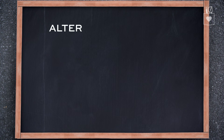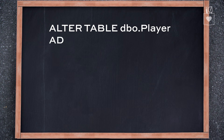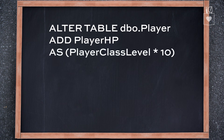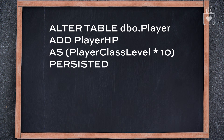That was a lot to think about. So keeping all that in mind, let's get back to the question at hand: how do we want to store player hit points in our database? Having gone through all this, we've decided the answer is to use a computed column. So let's set that up. First, we'll do an ALTER TABLE dvoPlayer, then ADD and the name of our new column — we'll call it playerHP. Then we need to define it, so we'll say AS playerClassLevel times 10. And finally, because we know this is deterministic, we can actually store the data, so we'll tell it to do PERSISTED. Once we've made this change, that column will get computed automatically.